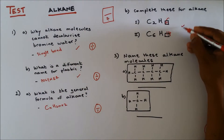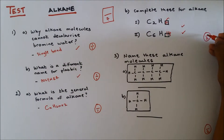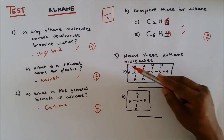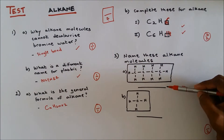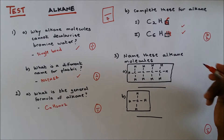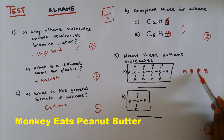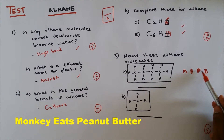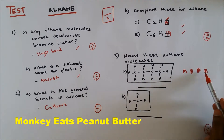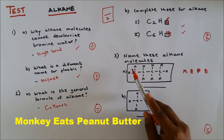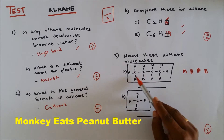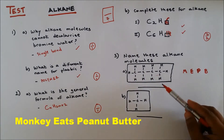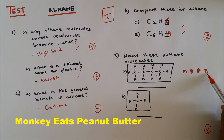Question 3: name this alkane molecule. We use a technique called 'monkey eat peanut butter' — monkey is methane, eats is ethane, peanut is propane, butter is butane. So counting 1, 2, 3, 4 carbons — for question 3a, this structure contains four carbons so it is butane.